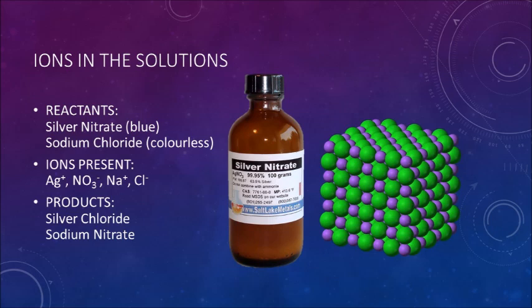When these two solutions are mixed, an insoluble cloudy white precipitate forms. The silver nitrate would form silver and nitrate ions, whereas the sodium chloride would form sodium and chloride ions. Therefore, the products of the reaction are silver chloride and sodium nitrate.